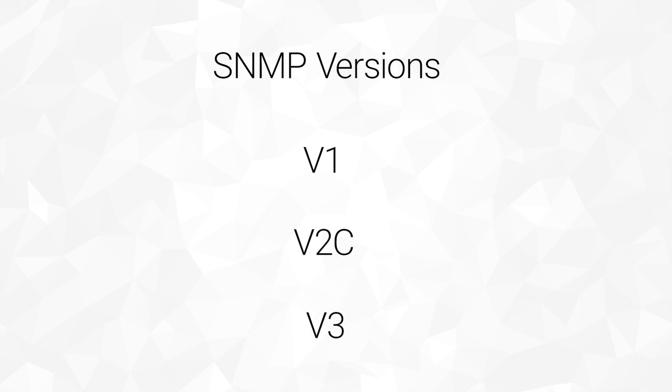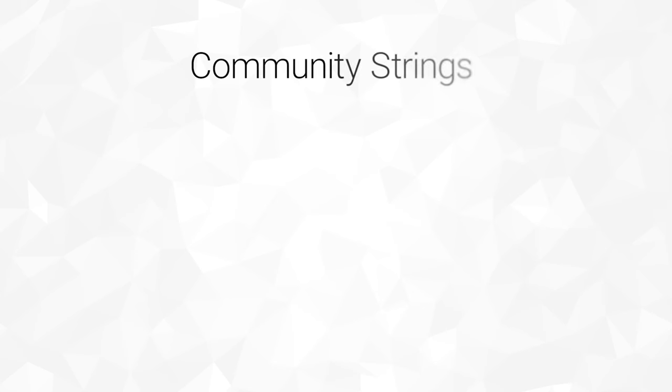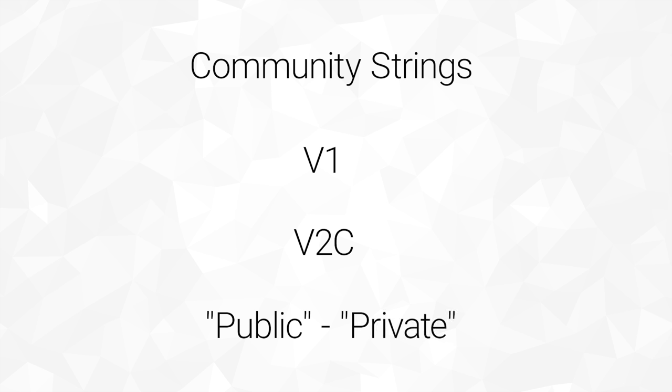Version 1 is the simplest and oldest, dating back to the late 80s. It's easy to set up, but has little to no security. This is because of what are called community strings, which act essentially like a password to a device. If the SNMP Manager request has the correct community string, the devices will respond to the query for information. If the string is wrong, the device simply doesn't respond. Most SNMP version 1 and version 2C equipment come pre-programmed with community strings set as public or private. It is recommended practice for Network Managers to change all strings to custom values.